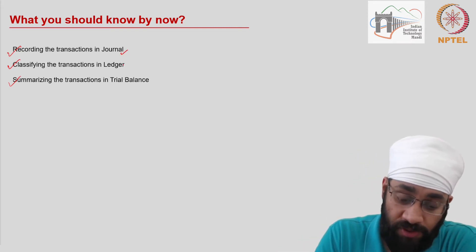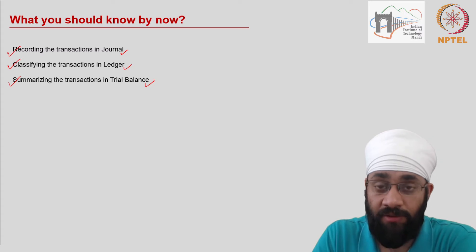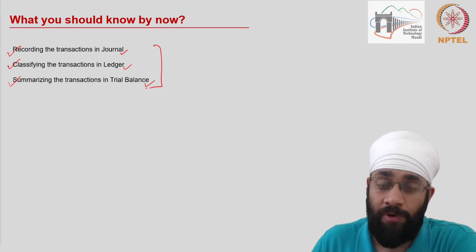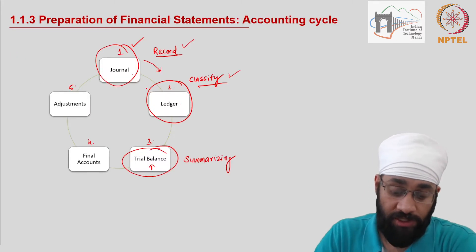You should know about the journal, ledger, and trial balance. These three books of accounts lead us to the next step of accounting, which is final accounts.